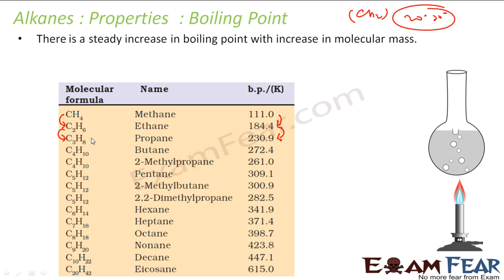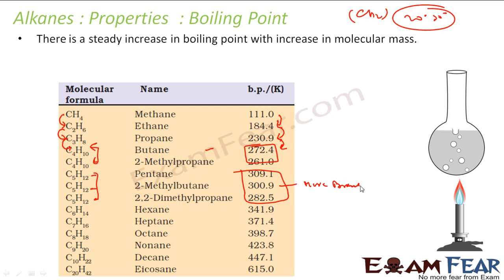So if you go from propane to butane, there is an increase. Now there is a catch. These two are butane isomers, and these three are all pentane isomers. Butane and 2-methylpropane have the same molecular mass and same molecular formula — they are isomers — but there is a difference in boiling point. Why? Because the more branched the structure is, the lesser the surface area. Less surface area means less van der Waals force, which means less boiling point.